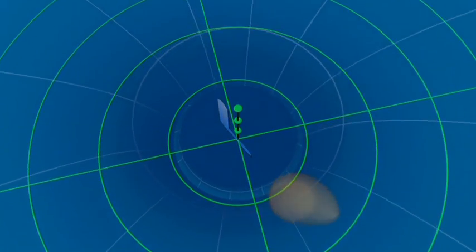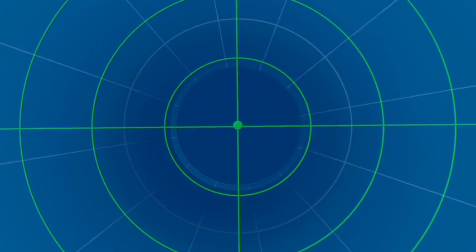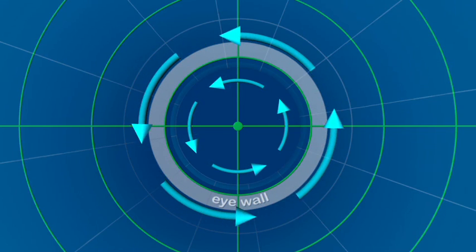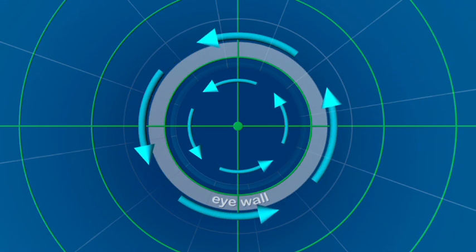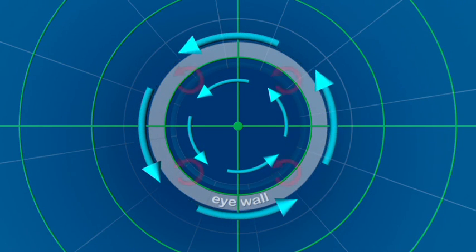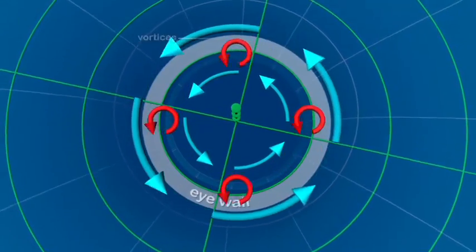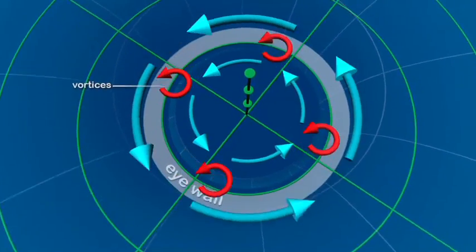What causes these hot towers to form? There's a big difference in wind speeds between the fierce eyewall and the relatively calm winds inside the eye. These rapid changes in wind speeds cause instabilities that can spin up intense vortices just inside the eyewall.